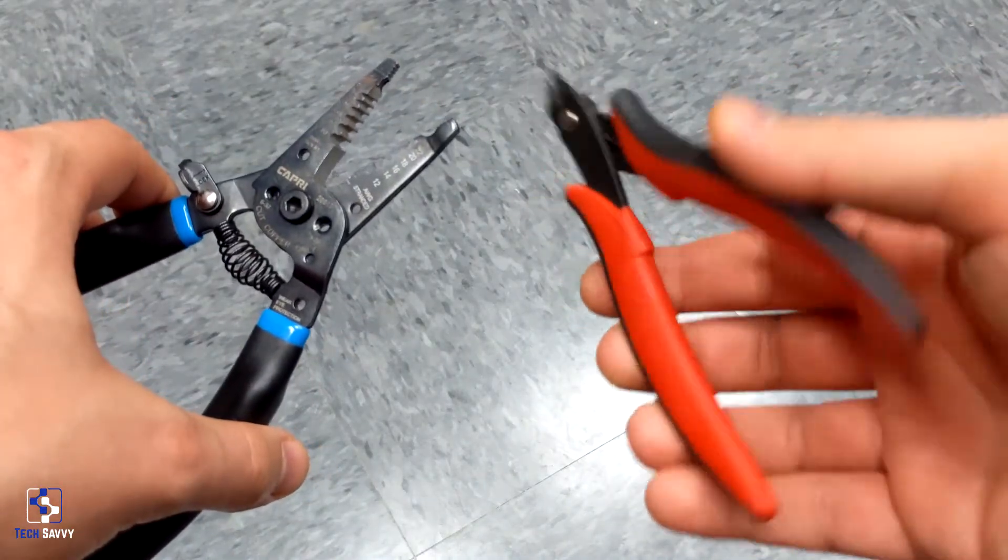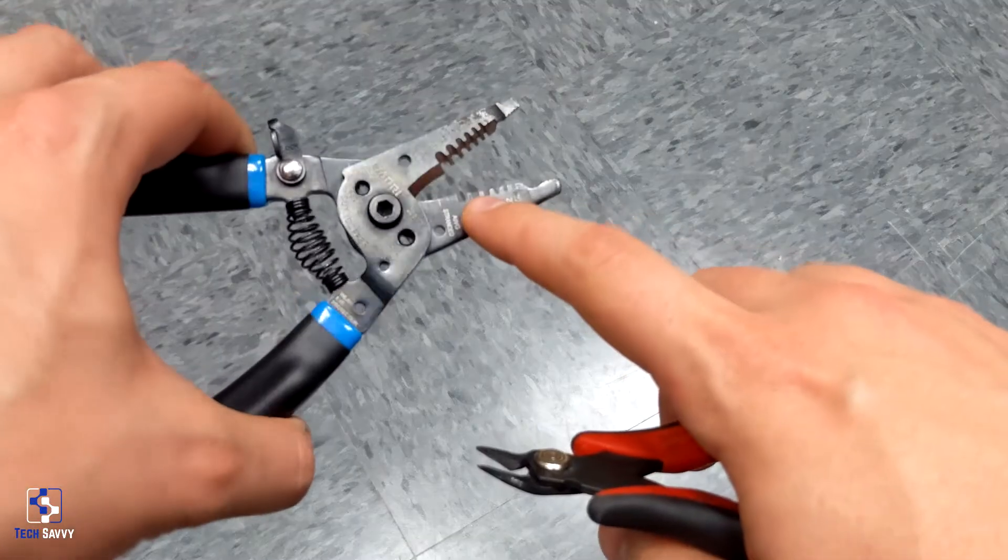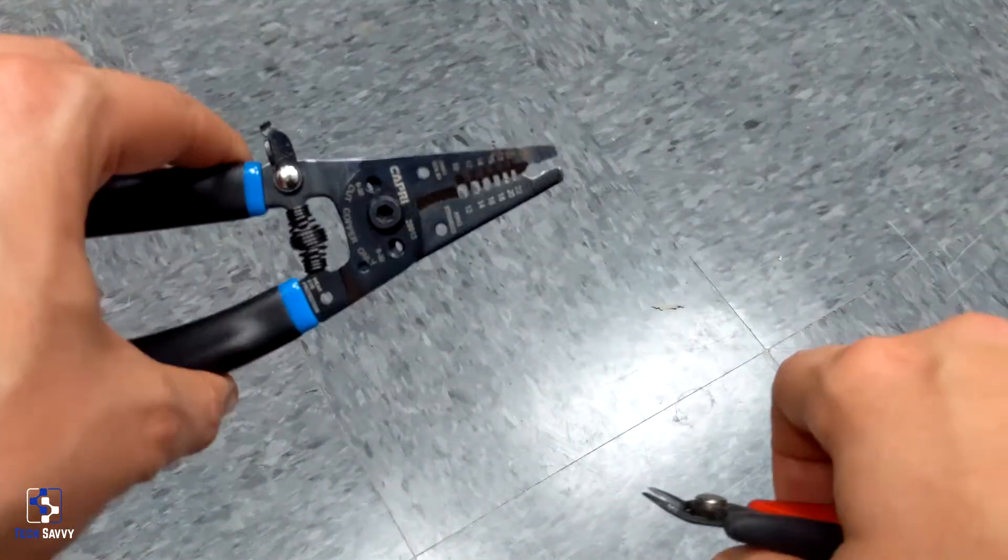I like these flush cutters here, they're about $10 on Amazon. But my set of wire strippers also has a pretty good cutting blade on it.